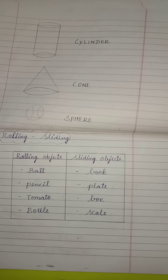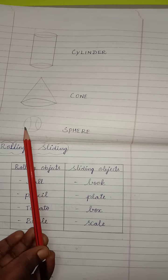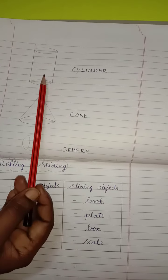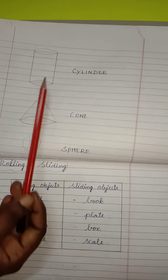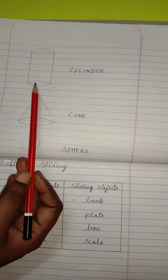Then, sphere. Sphere can roll. Because it has round surface. See children, cylinder can both slide and roll.